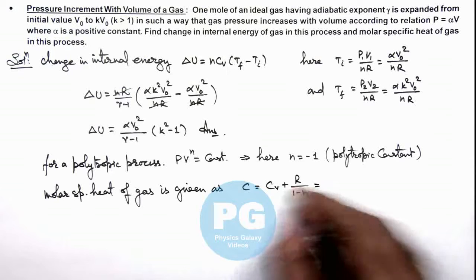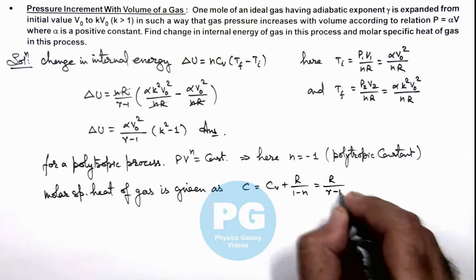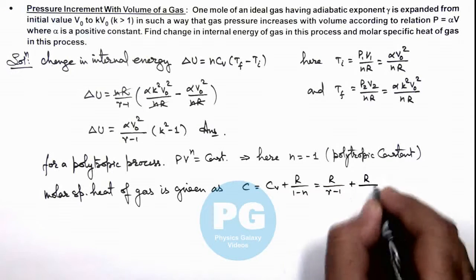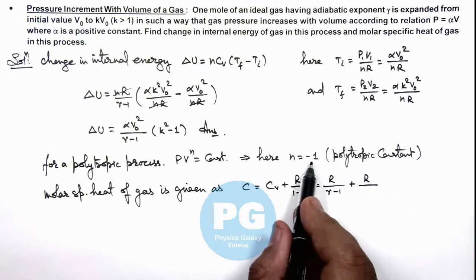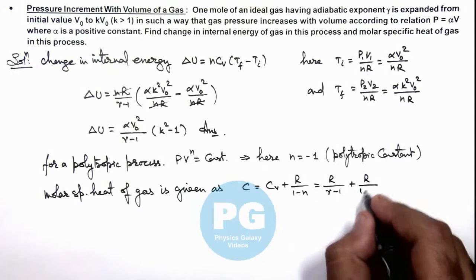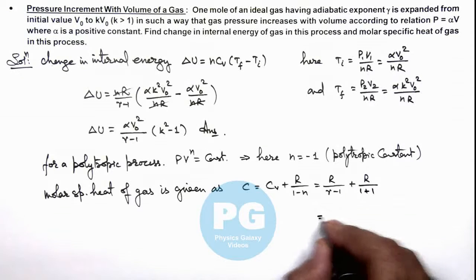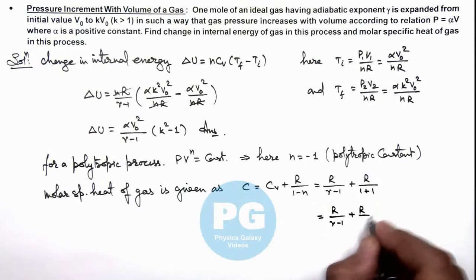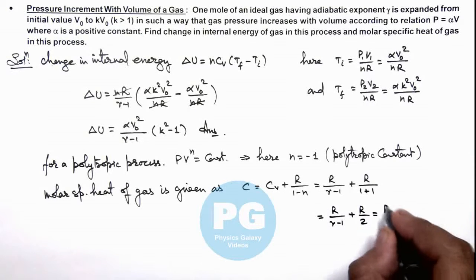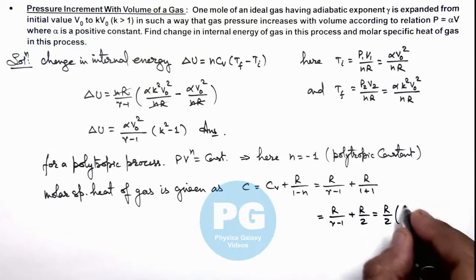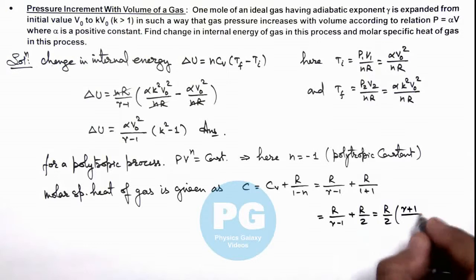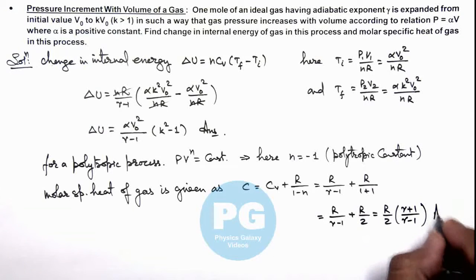That is R/(γ-1) + R by, here the value of n is given as -1, so it will be 1+1. So value of C we are getting is R/(γ-1) + R/2. On simplifying this gives R/2 multiplied by (γ+1)/(γ-1). That is the result of this problem.